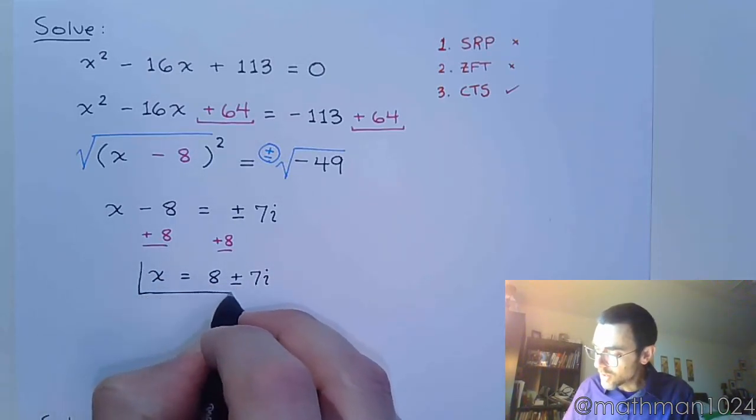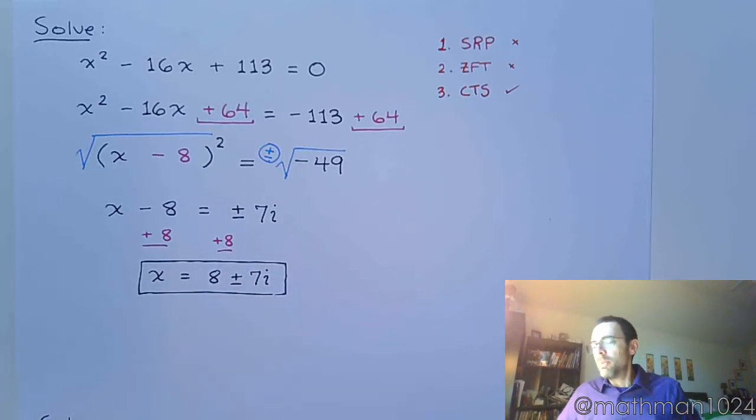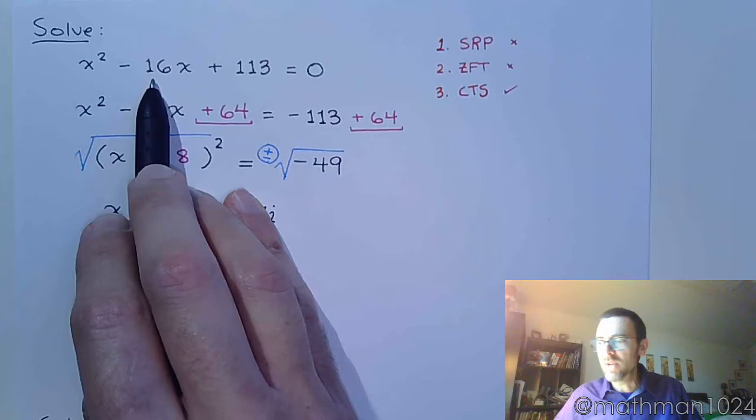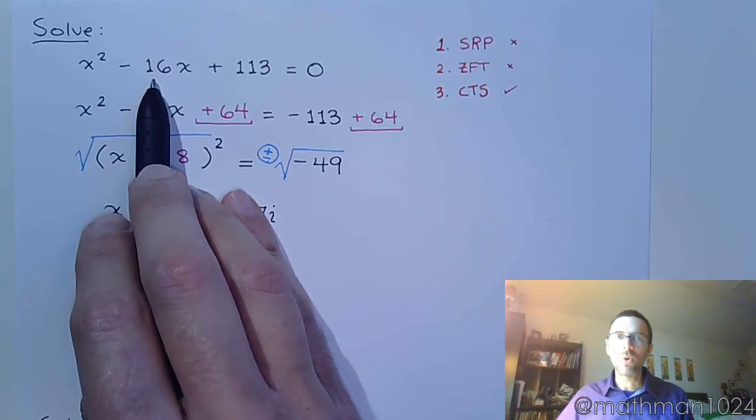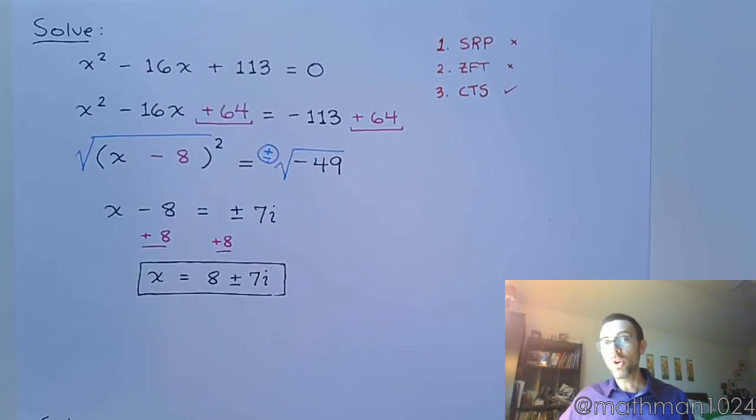So, x is equal to 8 plus or minus 7i. So, again, we could have used the quadratic formula here. In fact, this problem is in that section about the quadratic formula. But, the quadratic formula becomes really, really nasty because b is 16, and part of the quadratic formula is b squared, so you'd have to square 16 to get 256. You've got minus 4ac, which means minus 4 times 1 times 113, so that's, what, 452? Do you really want the large numbers? Probably not. So, let's avoid the large numbers, and let's be efficient and recognize that completing the square is the best way to solve this.